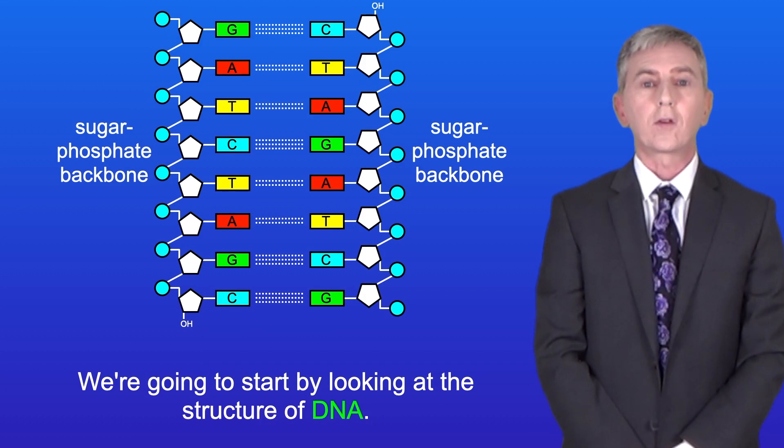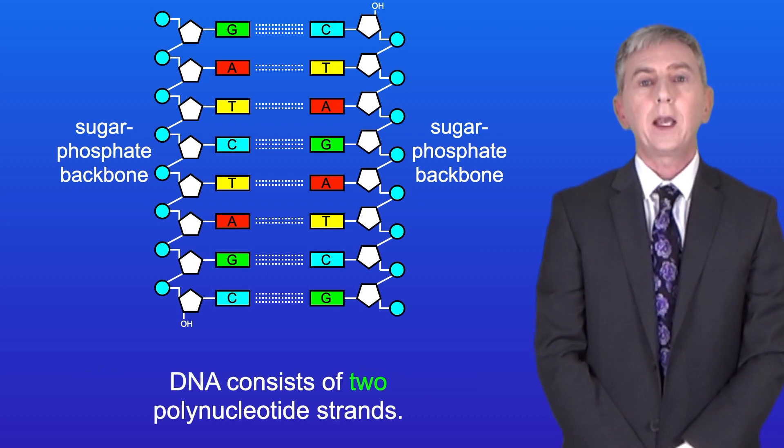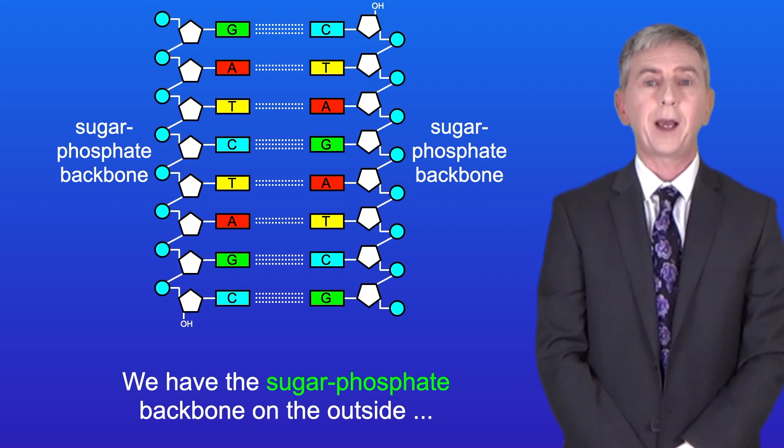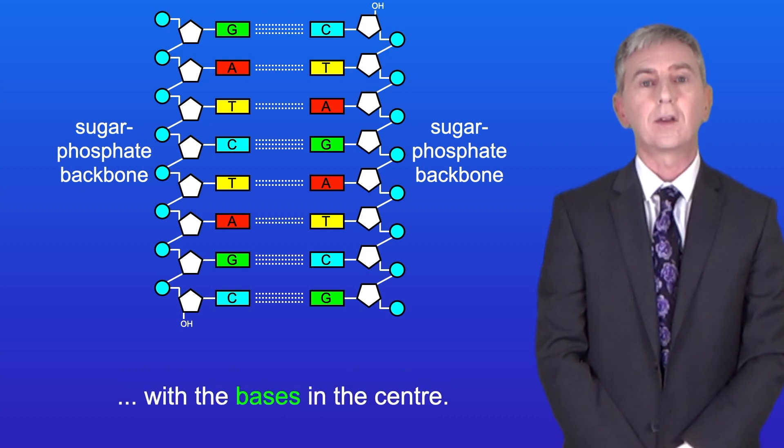We're going to start by looking at the structure of DNA. DNA consists of two polynucleotide strands so we have the sugar phosphate backbone on the outside with the bases in the center.